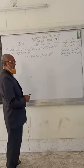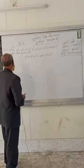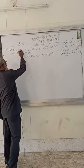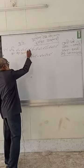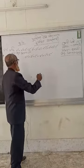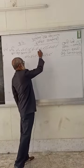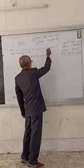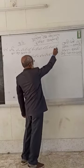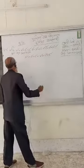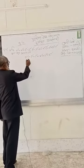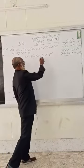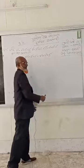Today we will work on all vishom (odd) numbers. The first number: A square is equal to X square plus Y square minus Z square. B square is equal to Y square plus Z square minus X square. And C square is equal to X square plus Z square minus Y square. Then, A square plus B square plus C square is equal to X square plus Y square plus Z square.